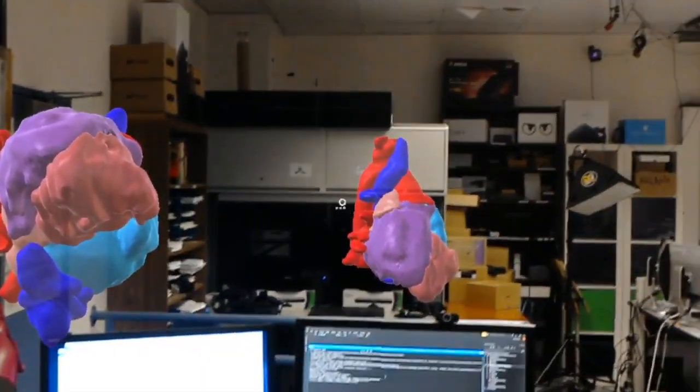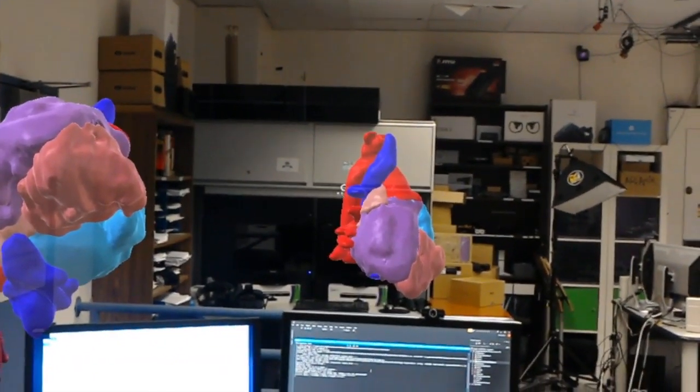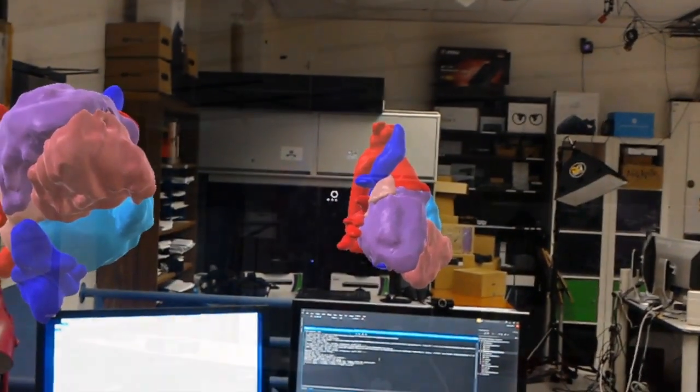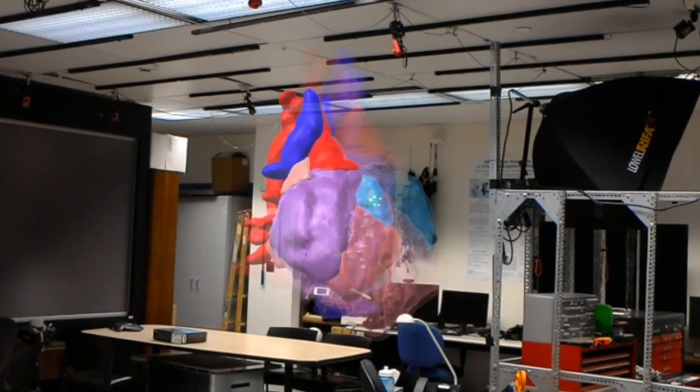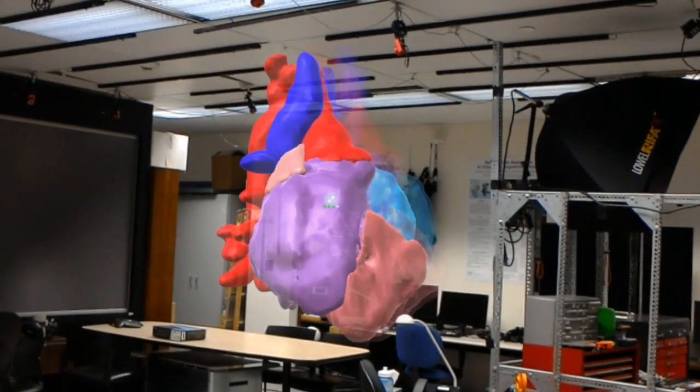Participants in our study were asked to repeatedly match the position, rotation, and scale of a virtual 3D anatomic model of a heart with those of a copy of the same heart model. These snippets are from a pilot study in which transparency transformations were also studied.